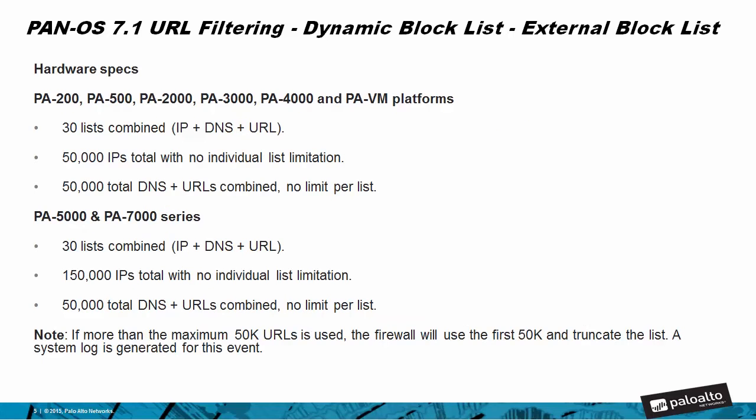For the hardware specs, all PA-200s, PA-500s, PA-2000 series, 3000 series, 4000 series, and all PA VM platforms can have a total of 30 lists combined with IP, DNS, and URL, can contain 50,000 IPs total with no individual list limitation, and 50,000 total DNS and URLs combined with no limit per list.